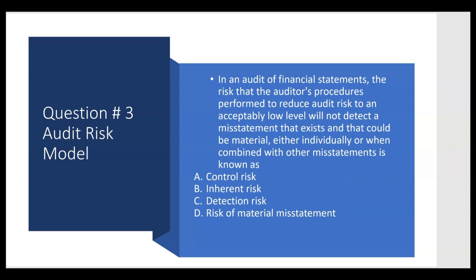Now that we know a little about the audit risk model, let's look at this question — it's going to be very wordy on the exam: 'In an audit of financial statements, the risk that the auditor's procedures performed to reduce audit risk to an acceptably low level will not detect a misstatement that exists — and that could be material either individually or when combined with other misstatements — is known as what?' The key is that it says the risk that the auditor's procedures will not detect a misstatement. Control risk and inherent risk have nothing to do with the auditor's procedures because they exist independently of the audit. So it has to be detection risk. The answer is C.